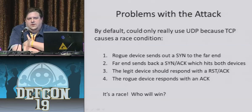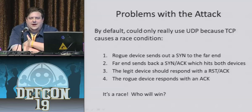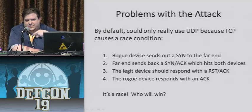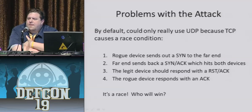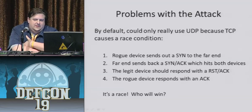If the rogue device sends out a TCP SYN packet, a SYN-ACK comes back. A legitimate device, if it sees a SYN-ACK packet — because a hub will broadcast to every port on the hub — it'll respond with a reset ACK. Meanwhile, your rogue device will respond with an ACK. So it's a race whose packet will get to where it's going first, and even then, the whole time it'll be causing problems.